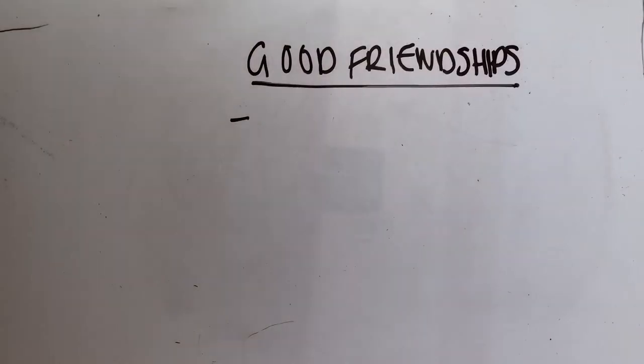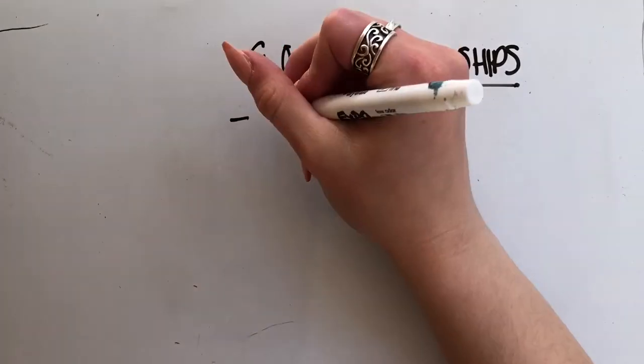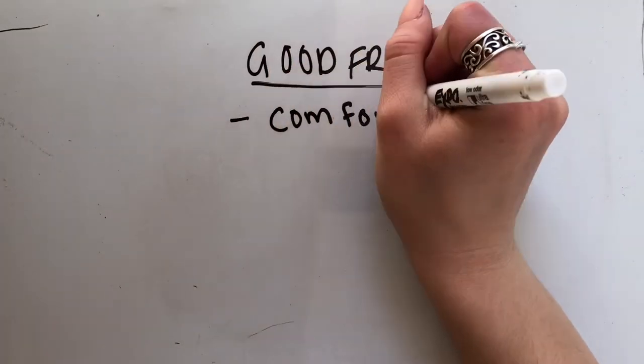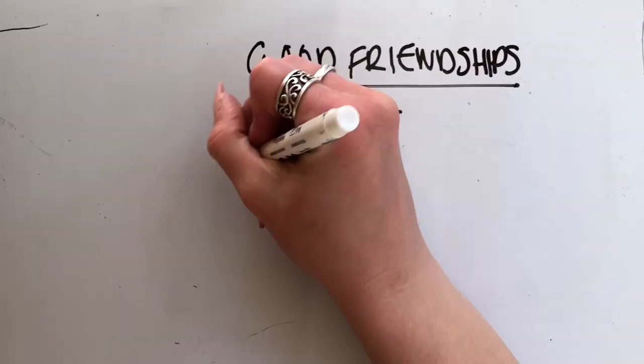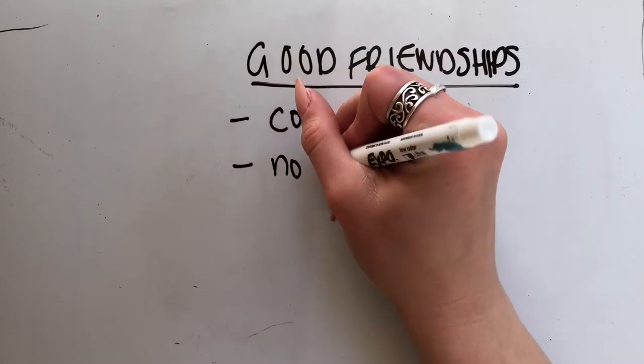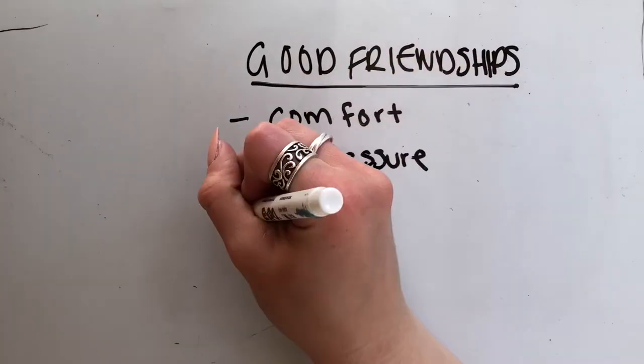Start by talking about what a supportive, healthy friendship between two girls would look like. Both girls feel comfortable with themselves in front of or around their friend. Neither girl feels pressured to participate in activities or act a certain way around the other.